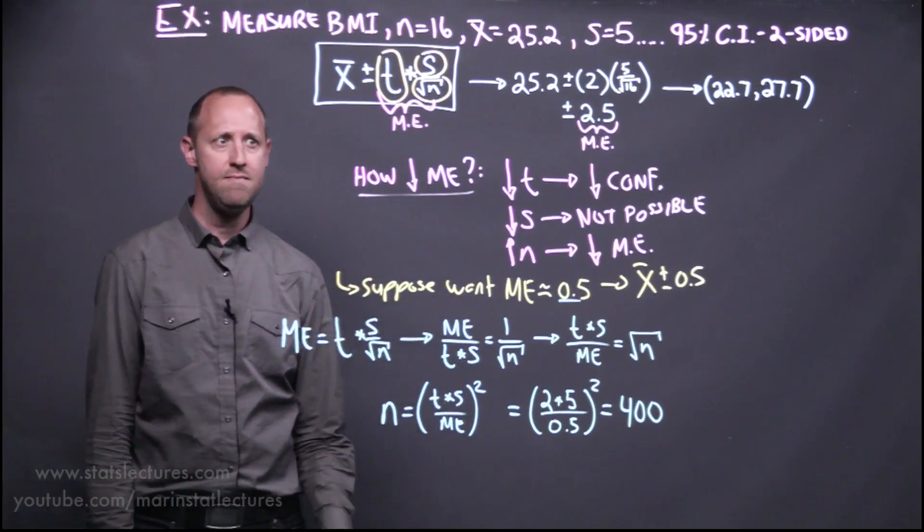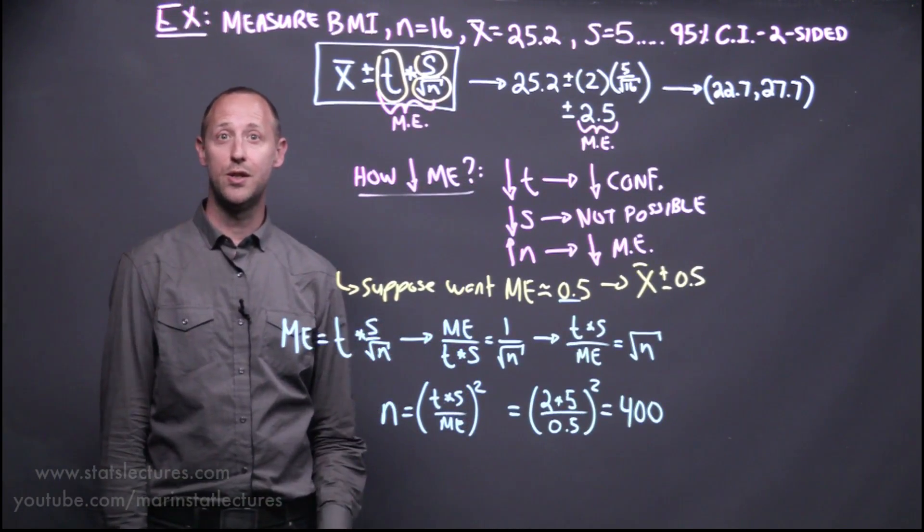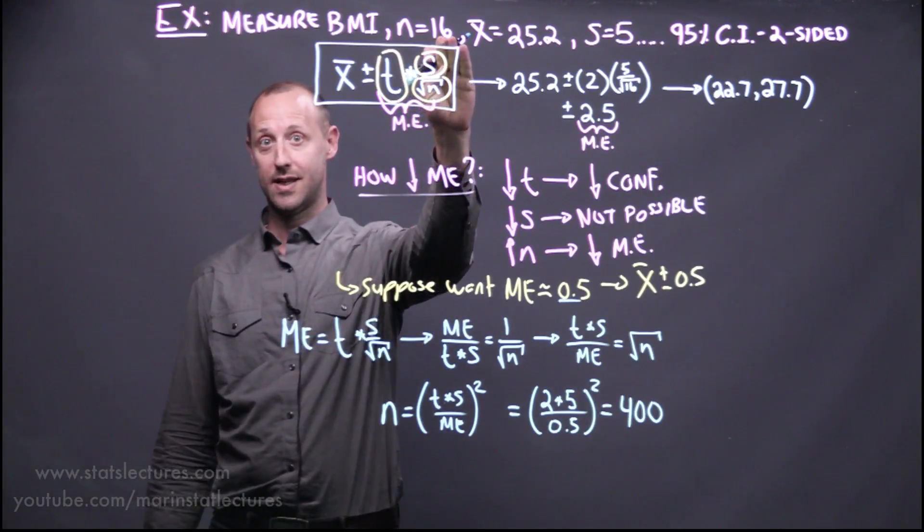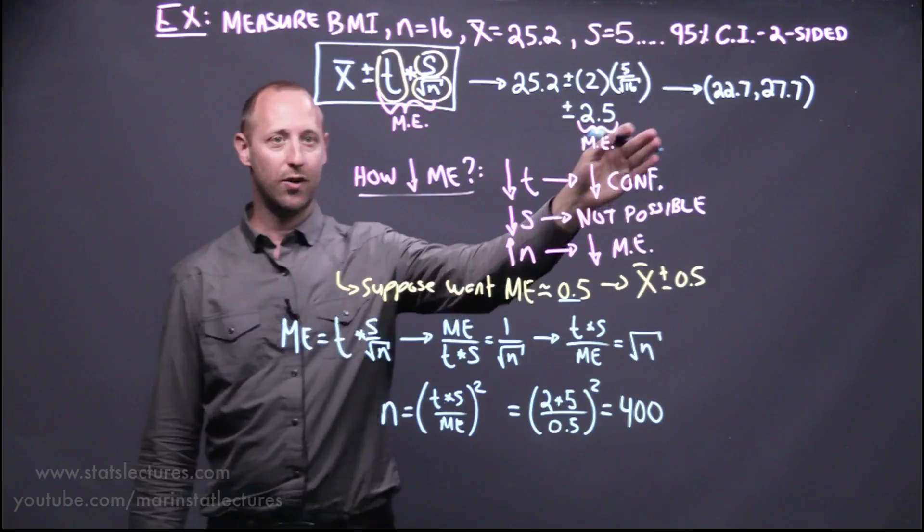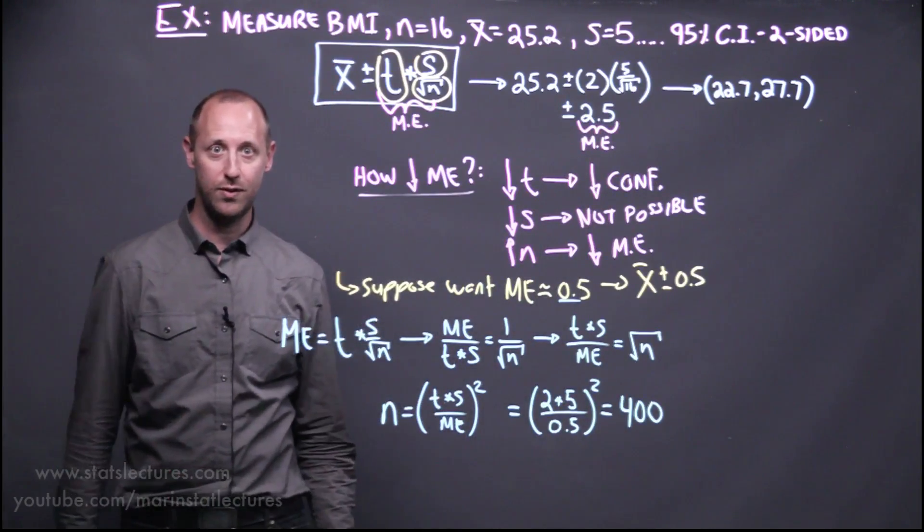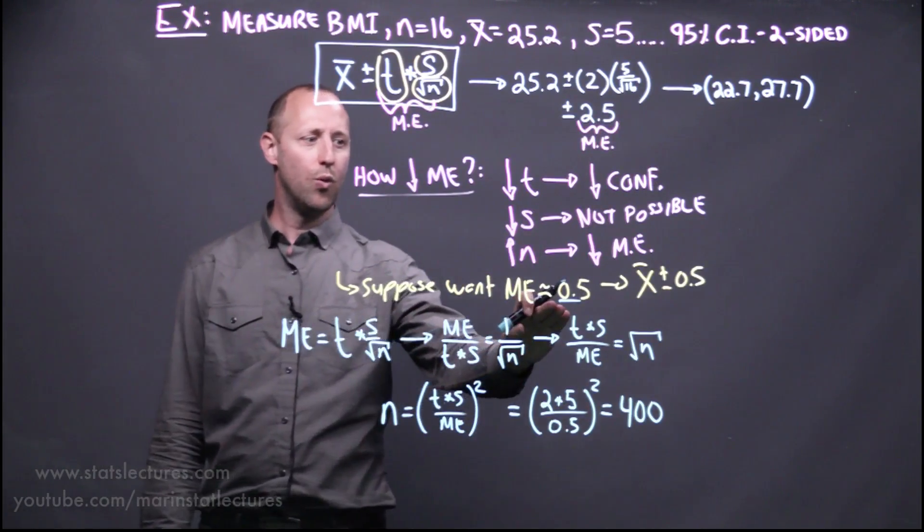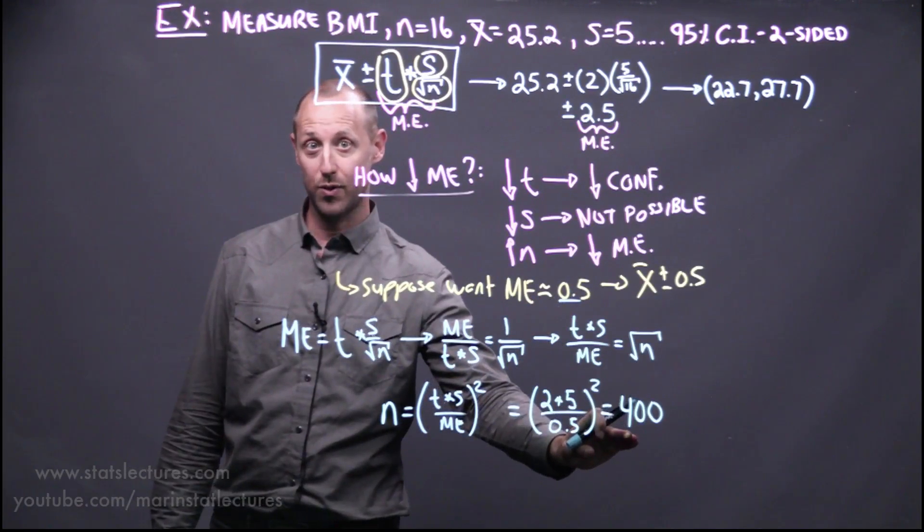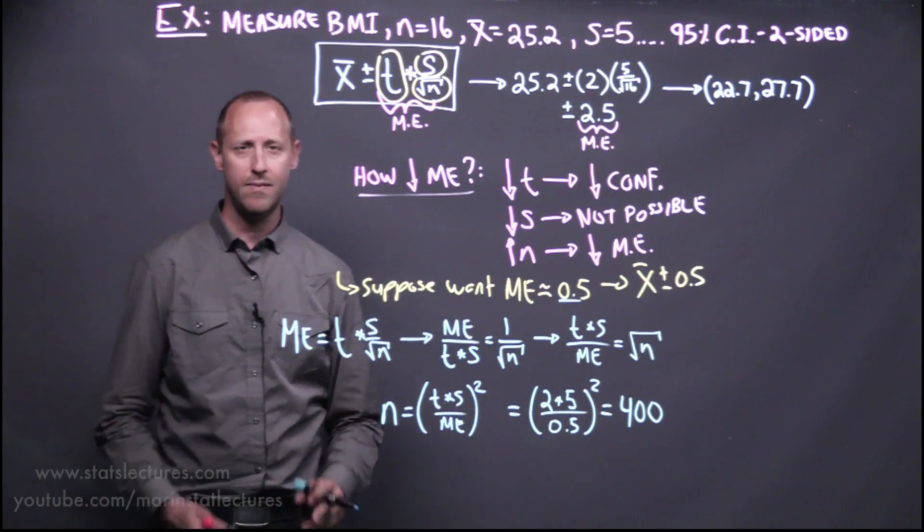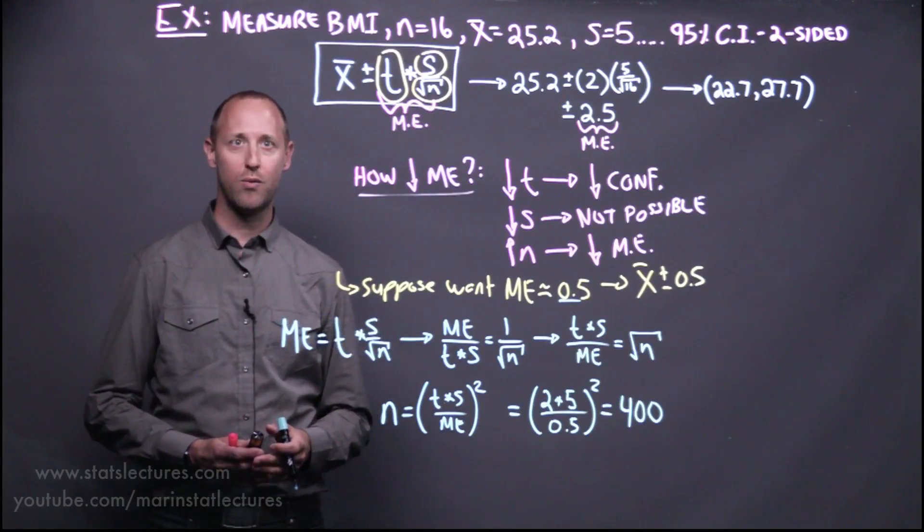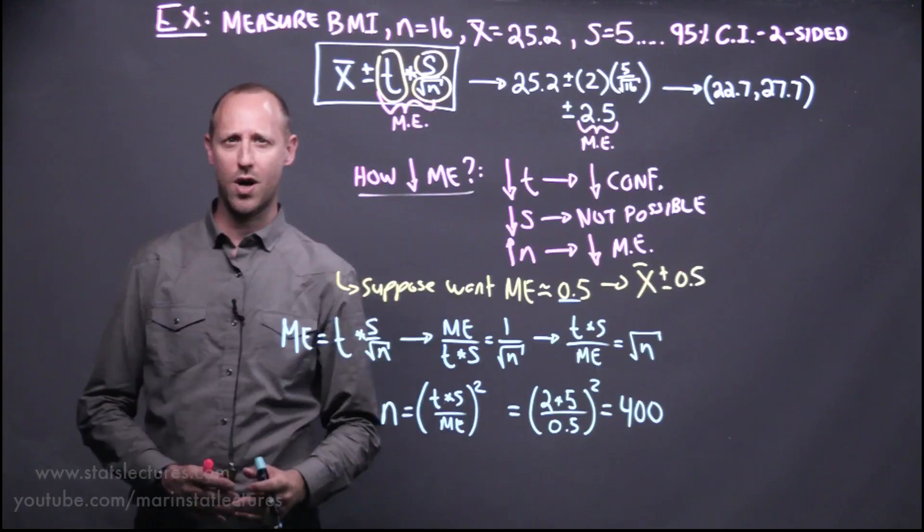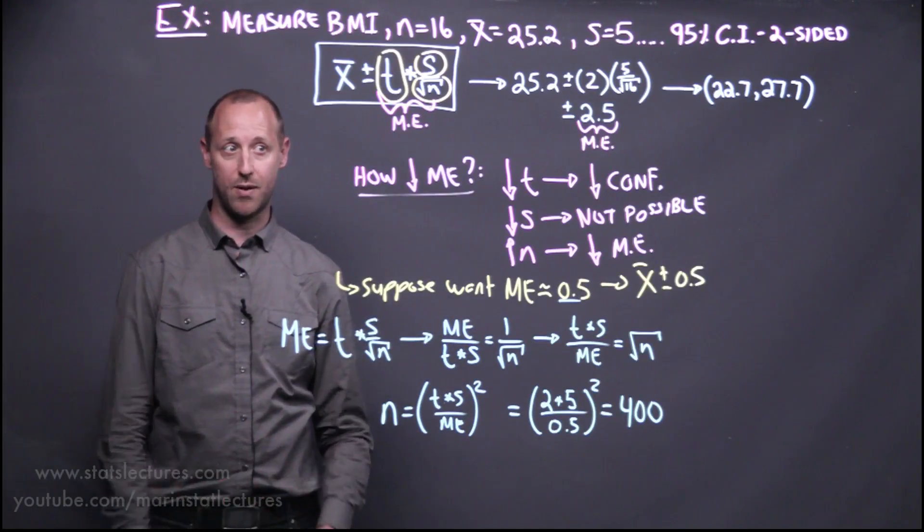So just some comments on this. The first is that it's good to make sure you plan ahead of time. So rather than collecting, say, 16 observations, finding out your interval is too wide to be useful, think ahead of time what size of margin of error do you need or do you want, and then figure out which sample size is necessary. And again, as noted before, when we get to more complicated estimates, the formulas become a little bit more complicated, but the underlying concept always holds.